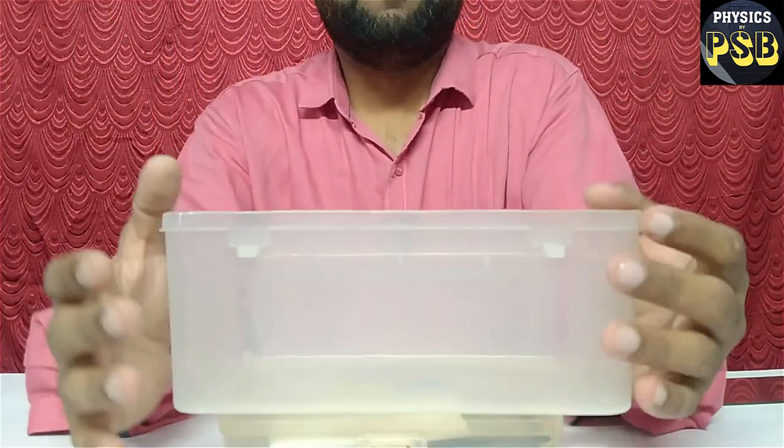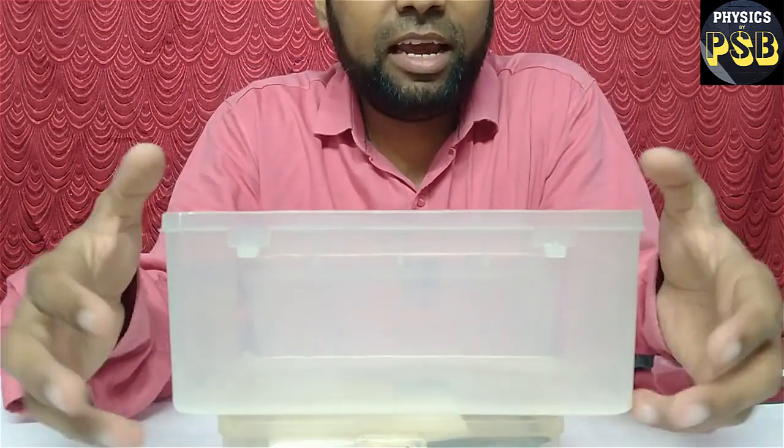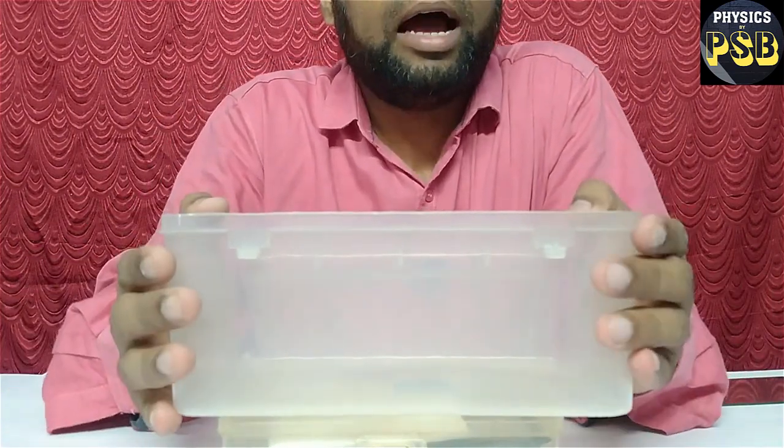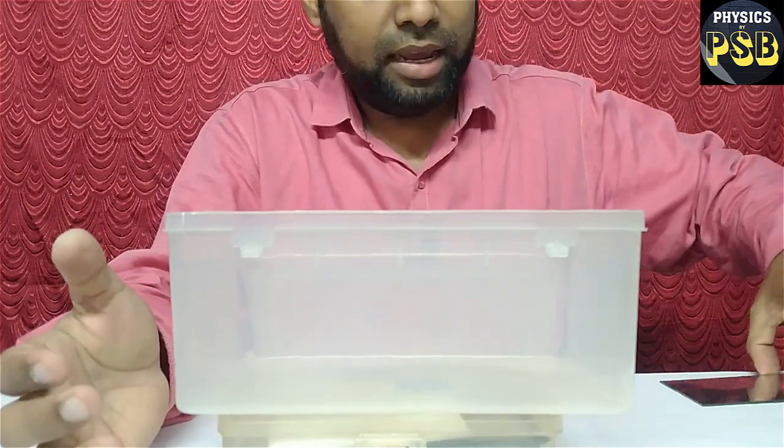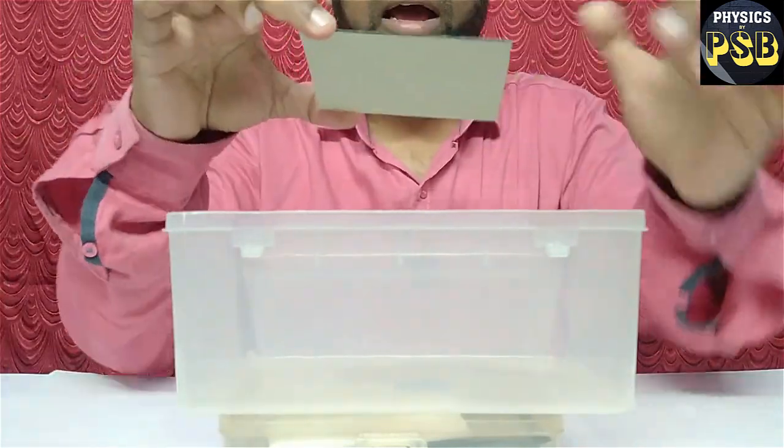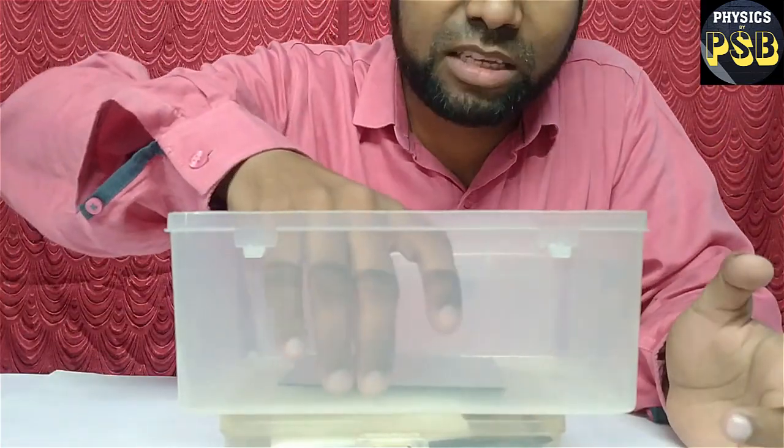I will explain the concept of reflection with the help of a simple experiment. To demonstrate the reflection of light, here I have a transparent box. In this, I place a plain mirror at the center of this box.